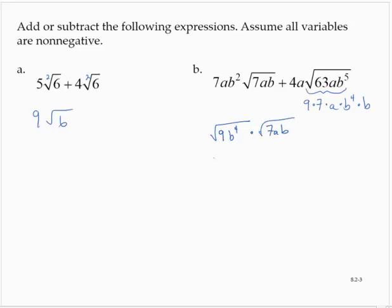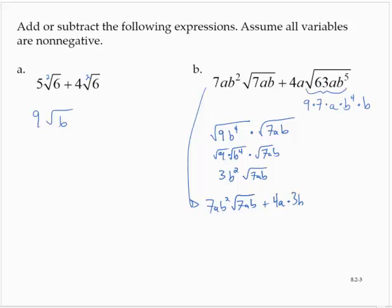The square root of 9b to the fourth is the square root of 9 times the square root of b to the fourth, times the square root of 7ab. So that's 3b squared times the square root of 7ab. So I have 7ab squared times the square root of 7ab, plus 4a times 3b squared times the square root of 7ab.